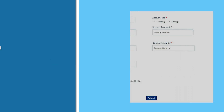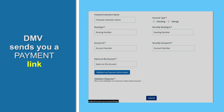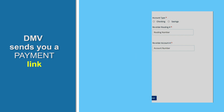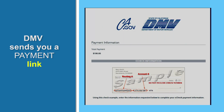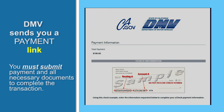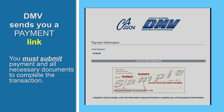Submitting an e-check is simple. Select which bank account you'll be using — checking or savings — and provide the routing and account numbers, along with your name. This illustration shows you where you can find this information on a check. Remember, you must submit payment and all necessary documents to complete the transaction.